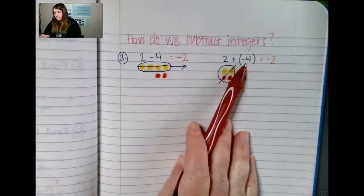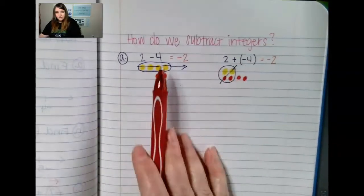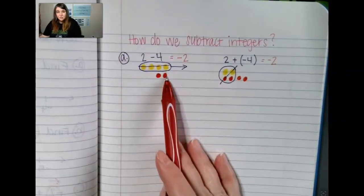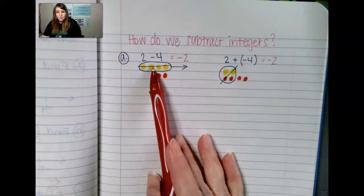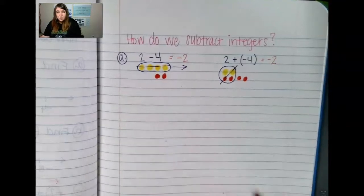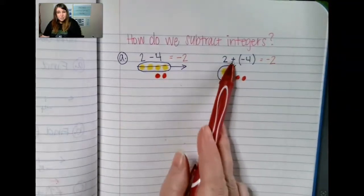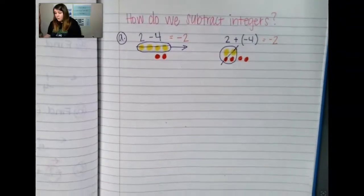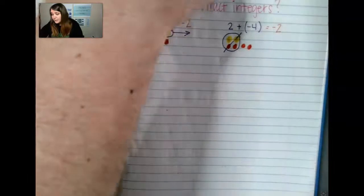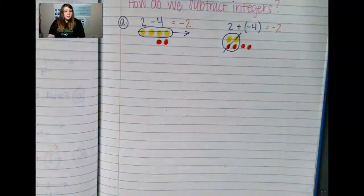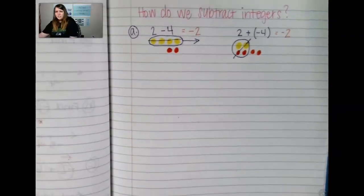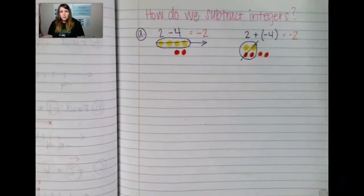Adding the opposite: I started with subtraction and saw that I had to add on 0 pairs in order to even make this possible. When instead, I could have just changed this to addition and made it become a negative — same thing we did in our last lessons.